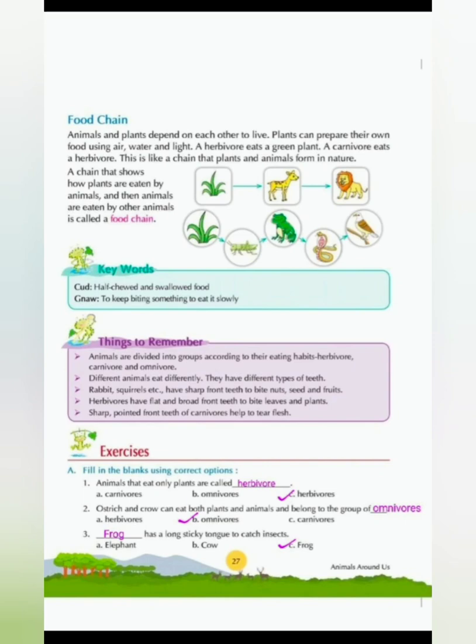Second: ostrich and crow can eat both plants and animals and belong to the group of — ? Ostrich and crow eat both plants and animals, so they are called omnivores. Third: dash has a long sticky tongue to catch insects. A frog has a long sticky tongue to catch its prey or insects, so the answer is frog.